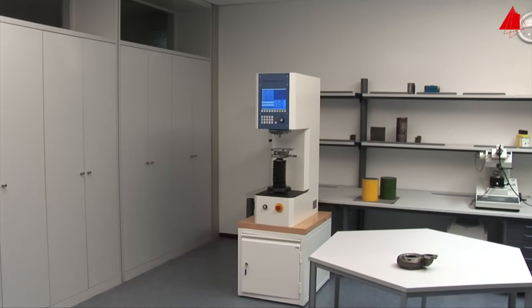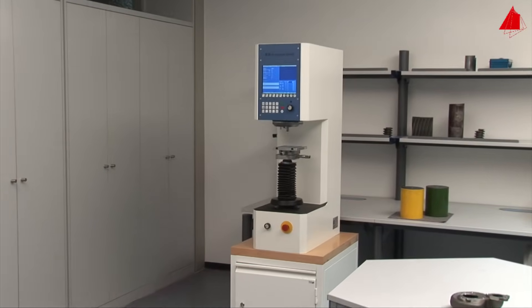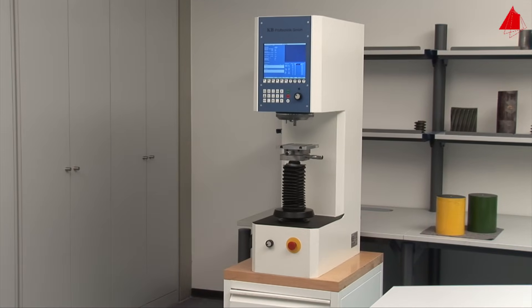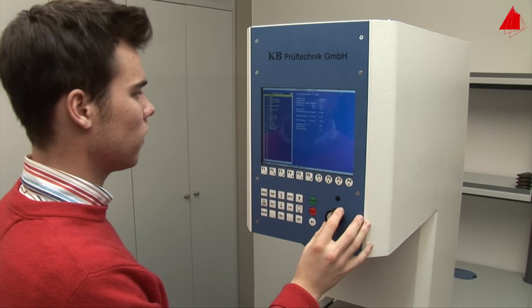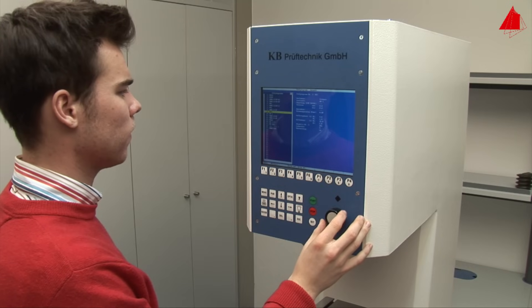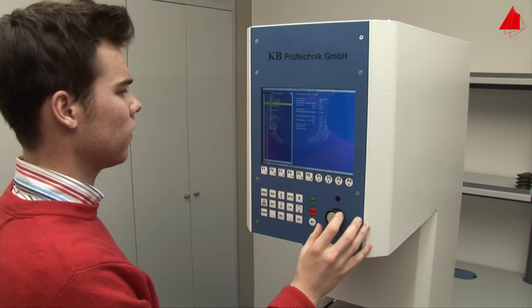First of all, the tester has to make himself familiar with the testing machine. A monitor and the control panel are positioned in the upper part of the machine. These are used to select and program different testing methods.